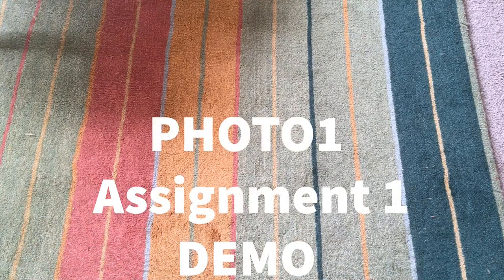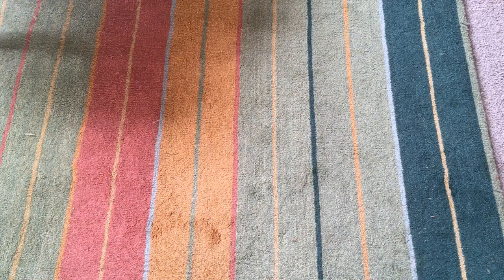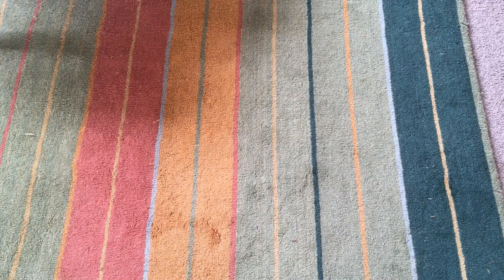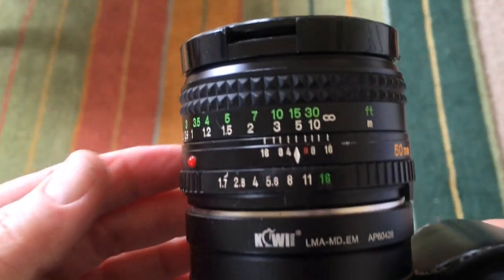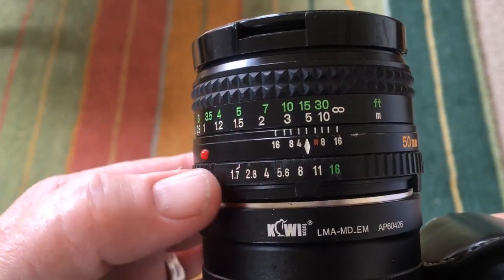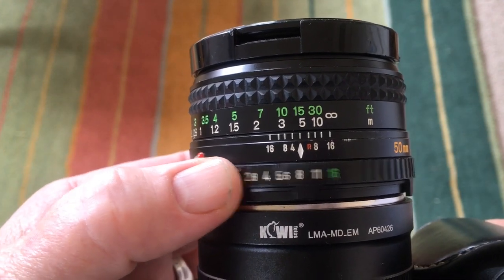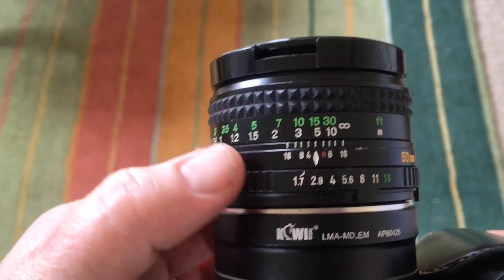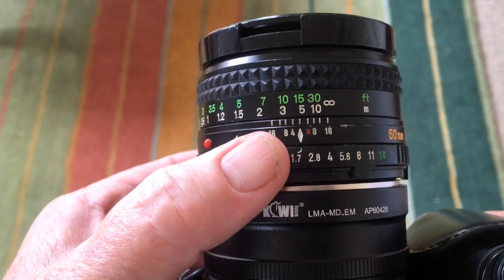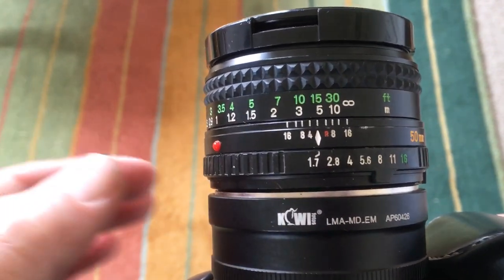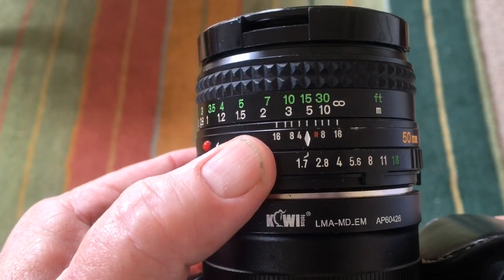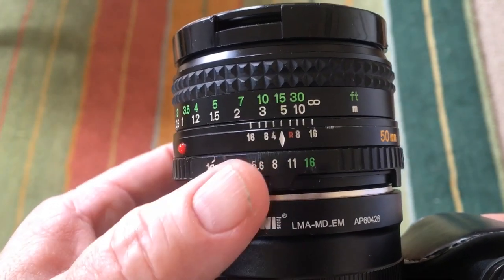I'm going to show you how to set your camera if you have a digital single lens reflex camera, or DSLR. I'm working with a manual lens, so I have to change the aperture by hand. You can see this lens goes from an aperture of 1.7 up to 16.